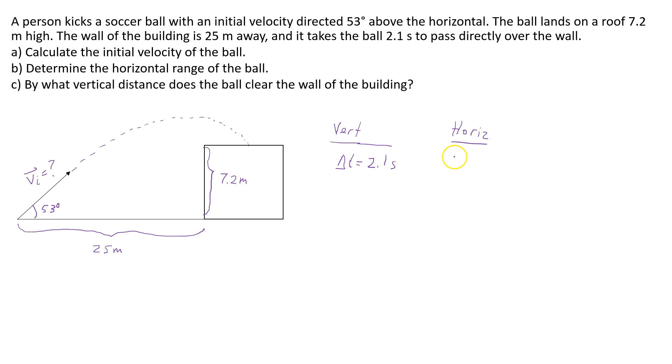In the horizontal, we know the displacement. So the displacement in the horizontal, I use an X for the horizontal, is 25 meters. The time is the same, 2.1 seconds, for it to reach this point, to be above the wall.